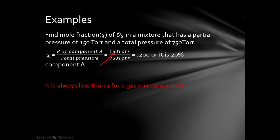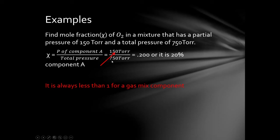Find the mole fraction of oxygen gas in a mixture that has a partial pressure of 150 torr and a total pressure of 750 torr. All we're doing is finding the ratio of oxygen: 150 torr out of 750 torr total. So 150 over 750 is 0.2, or 20%. That tells us our mole fraction for oxygen is 20%. It's always going to be less than one for a gas mix component.